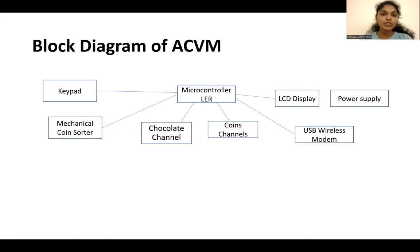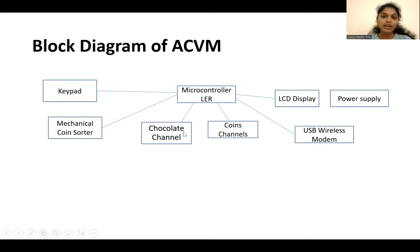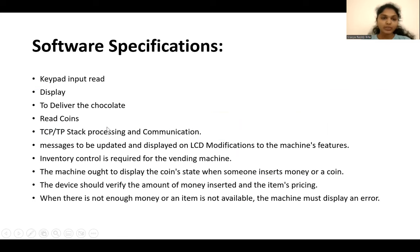This is the block diagram of ACVM, which includes keypad, microcontroller, LCD display, power supply, USB, wireless modem, coin channels, chocolate channel, and mechanical coin slotter.